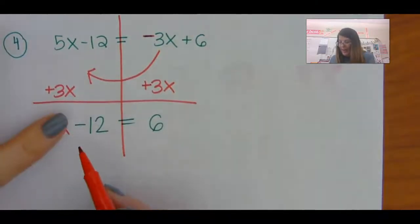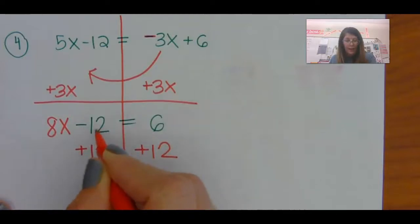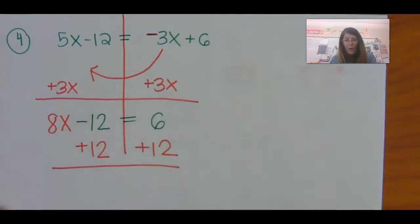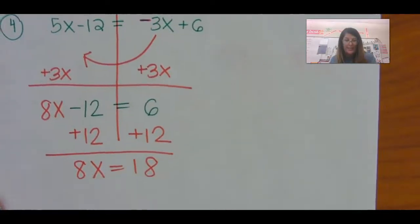Now, I'm trying to get the 8x alone. How do I get that alone? I subtracted 12, so I do the opposite of that, which is adding 12. And I have 8x is equal to 18.